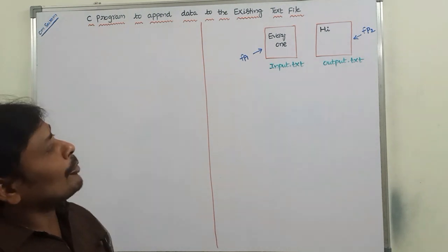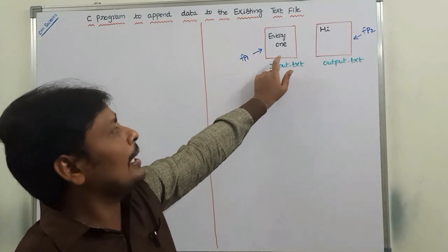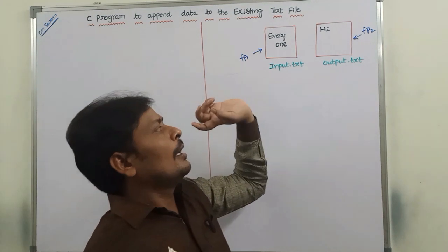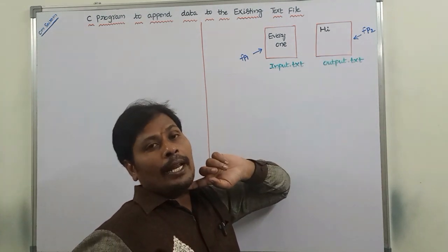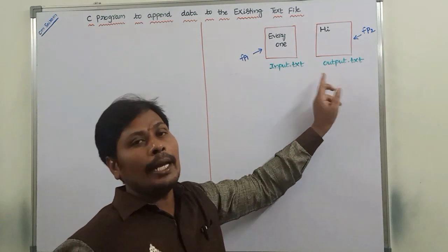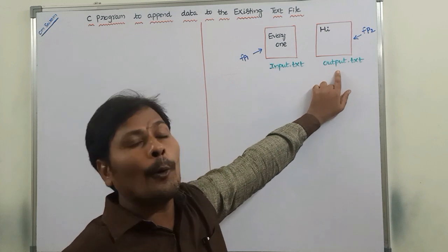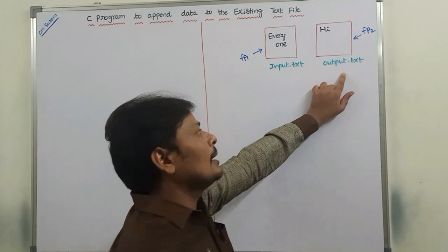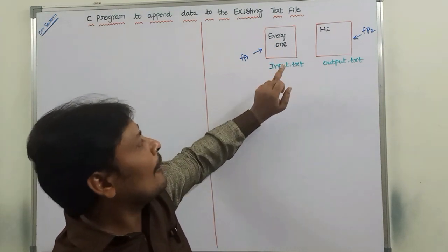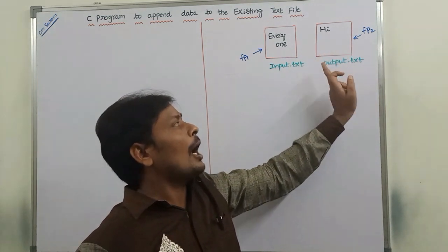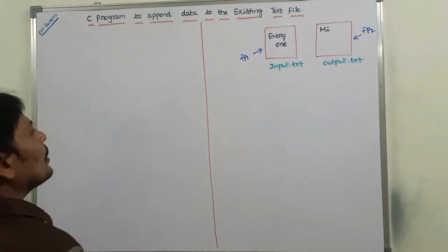Before writing the program, first we have to read the data in input.txt file, so this file can be opened in read mode. Next, we have to add the data from input.txt to output.txt, so output.txt can be opened in append mode. We are opening output.txt in append mode because it is an already existing file that contains the data 'hi'. We are adding the content of input.txt and appending it to output.txt, so finally output.txt contains 'hi everyone'.